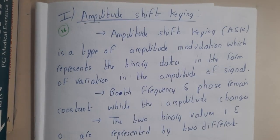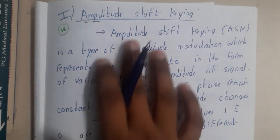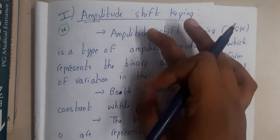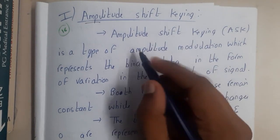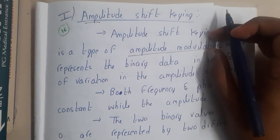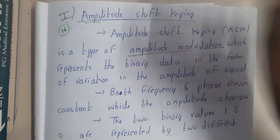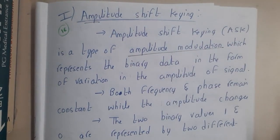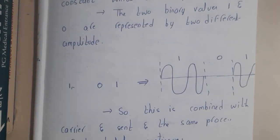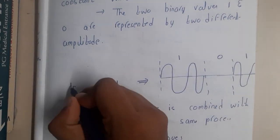I know that most of you did not get that much of an idea, so once you go through the example you'll get a clear idea. Basically, Amplitude Shift Keying is a type of amplitude modification method. Using this method we will be representing our binary data in terms of an analog signal. That concept is nothing but Amplitude Shift Keying. Now let us go through an example.